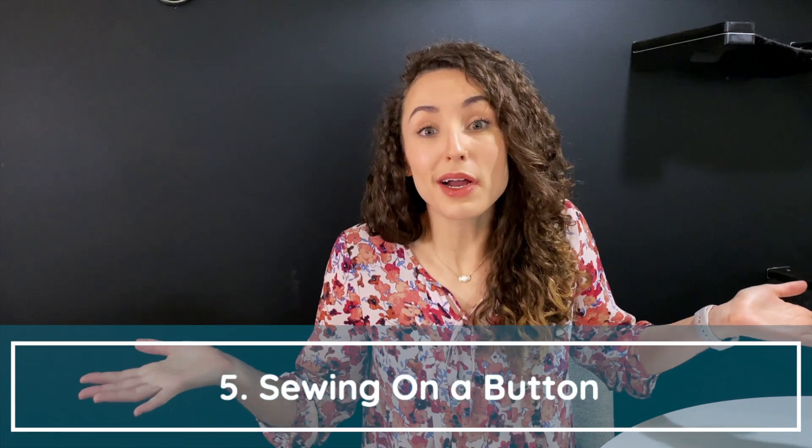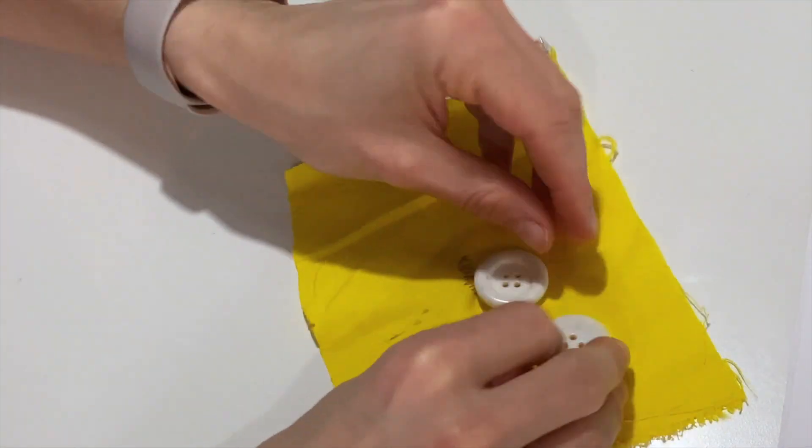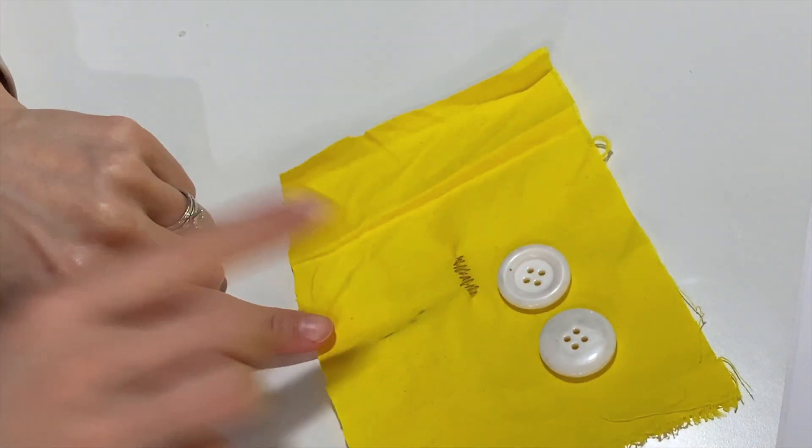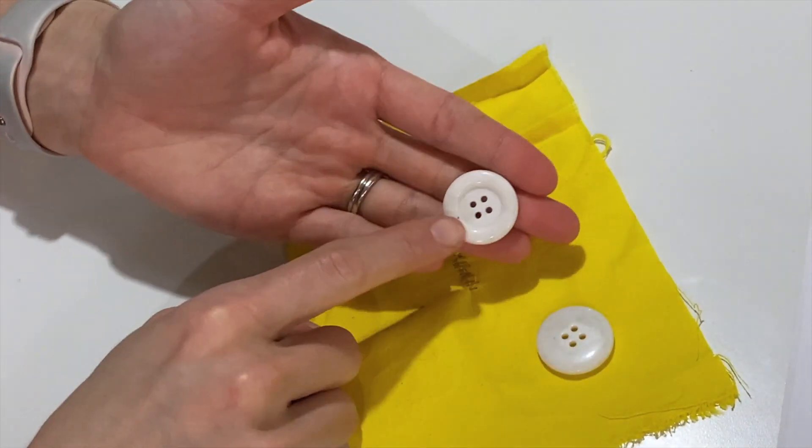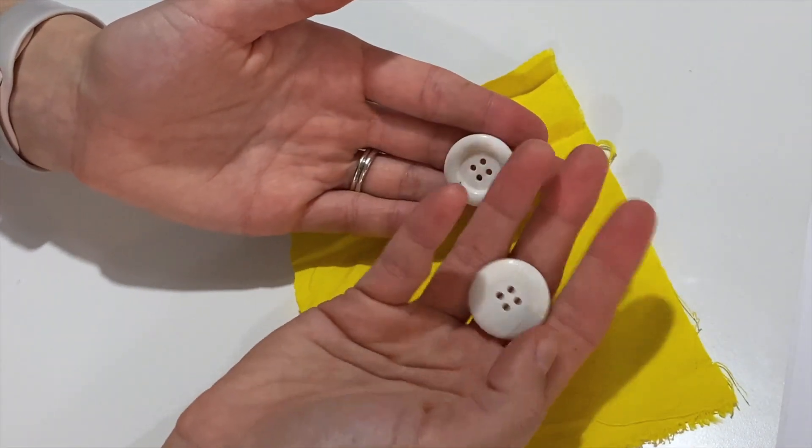Number five, how to put a button on when it falls off. When you're sewing on a button, the first thing you need to recognize is that there is a front and a back to your button. The button front with the lip on it or the edge is the front. The smooth side is the back.